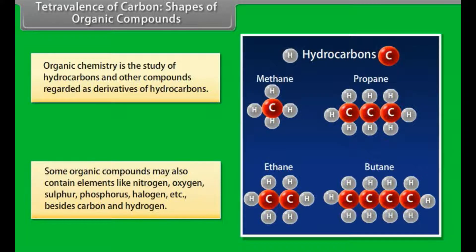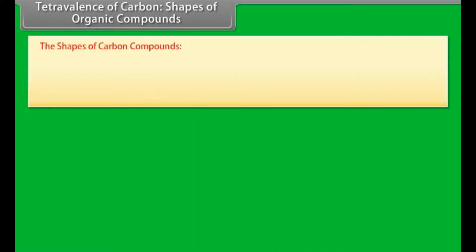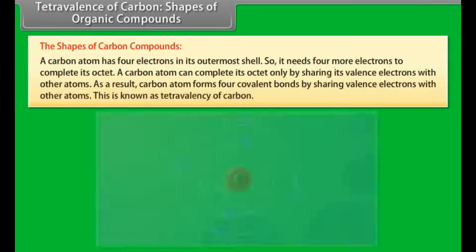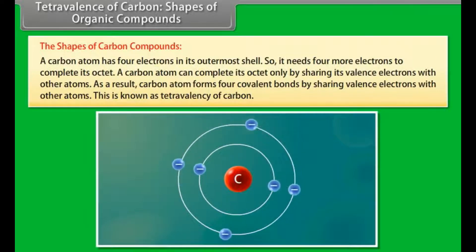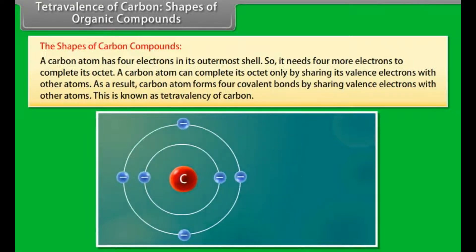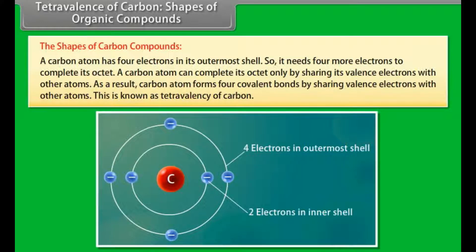A carbon atom has 4 electrons in its outermost shell, so it needs 4 more electrons to complete its octet. A carbon atom can complete its octet only by sharing its valence electrons with other atoms. As a result, carbon atom forms 4 covalent bonds by sharing valence electrons with other atoms. This is known as tetravalency of carbon.